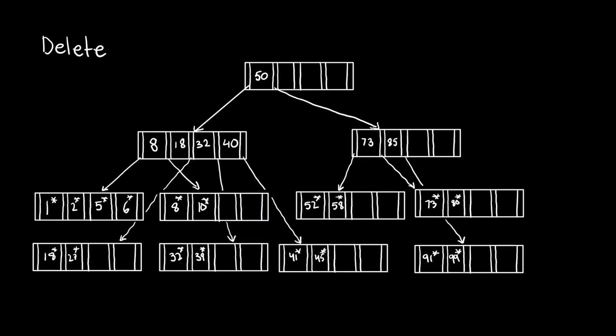Let's look at a more complicated example. Let's delete 73 from this tree. Looking at the root, 73 is greater than 50, so we traverse down the pointer after 50. At the next level, we find an entry with value 73, but it is not a data entry, so again we go to the right. Now we've reached the data entry 73 and we delete it. We need to check if the tree is still valid. After deleting 73, that entry is less than half full, so the tree is not a valid B+ tree.